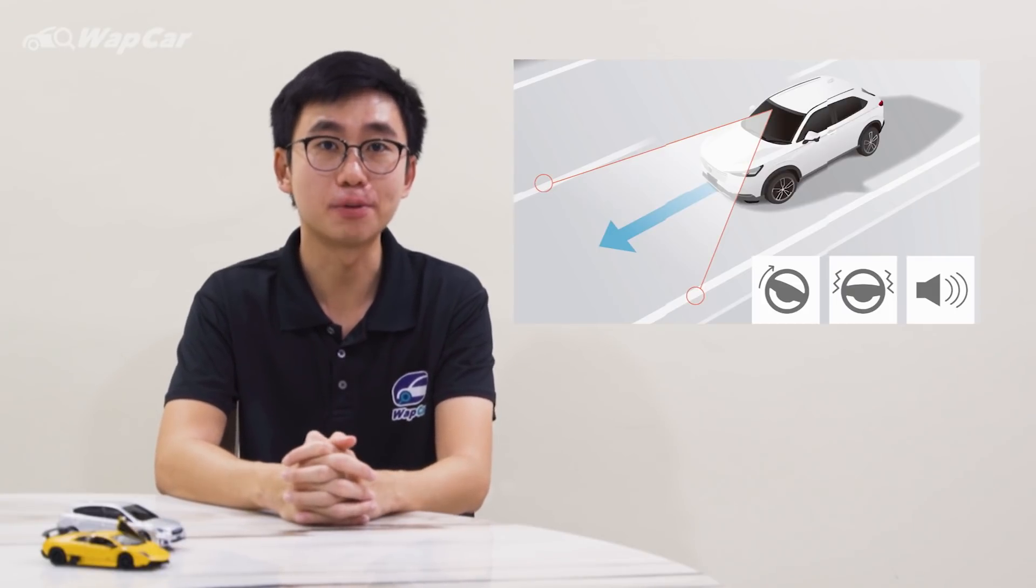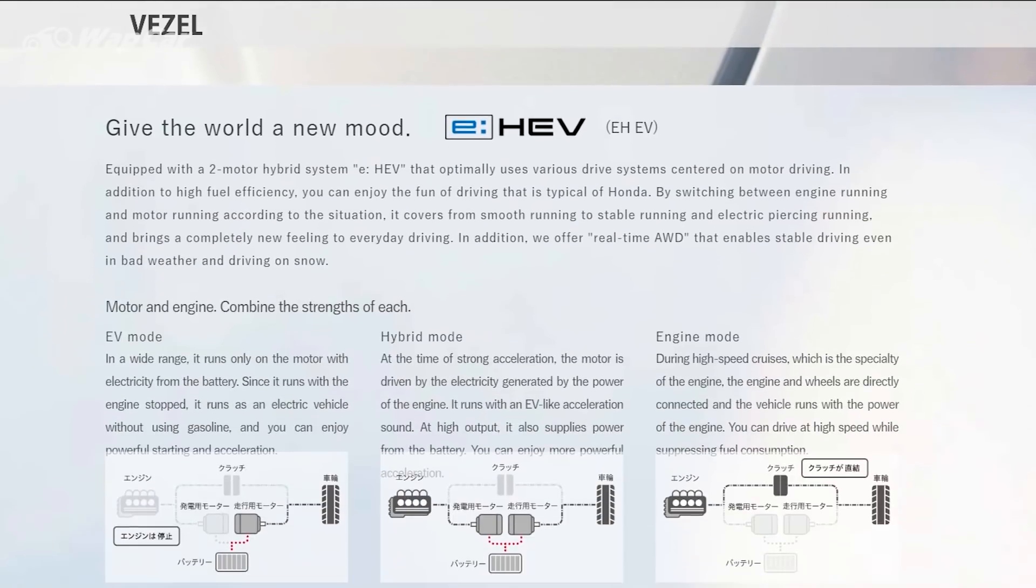Honda did not disclose the powertrain information in full, but have announced that in Japan the HR-V will be available with the 1.5 liter naturally aspirated four-cylinder DOHC i-VTEC petrol engine paired to a CVT, as well as the new e:HEV hybrid powertrain.